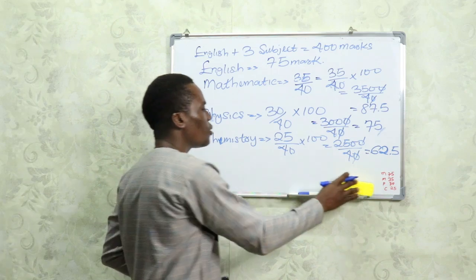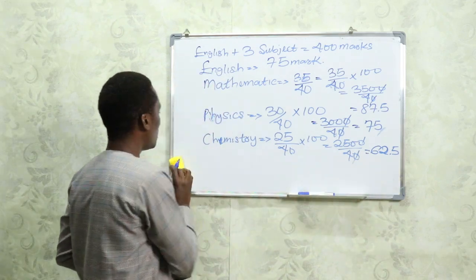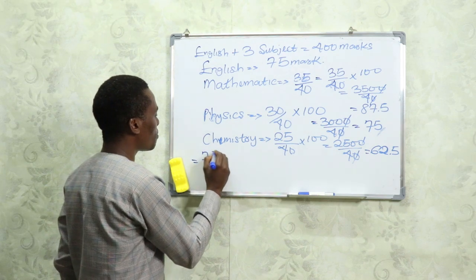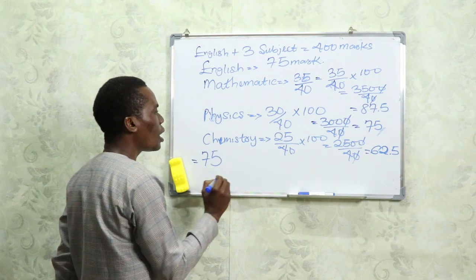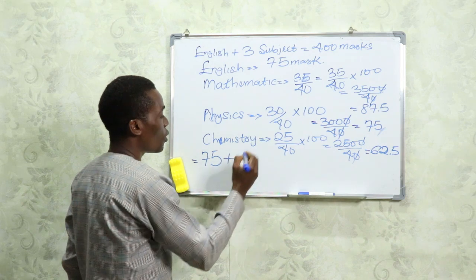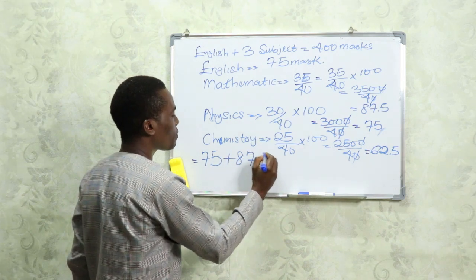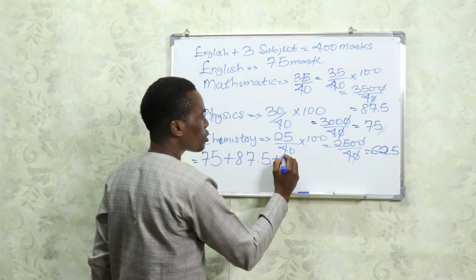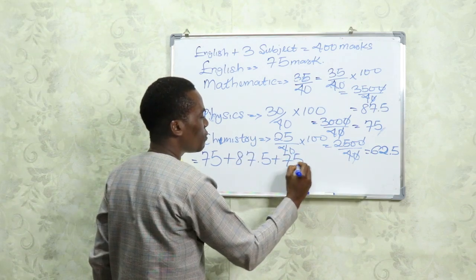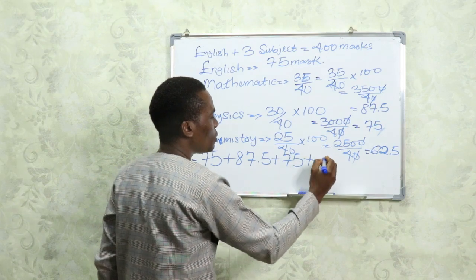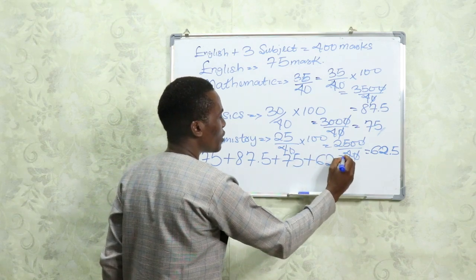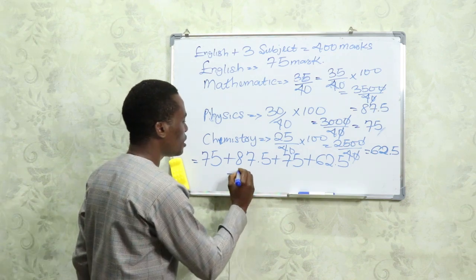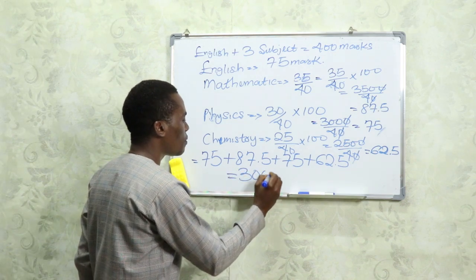Now let's see how you are going to get a 300 score from all these. Your English you are going to get 75 marks, plus your mathematics you score 87.5, your physics you score 75, in your chemistry you score 62.5. Now sum all these things together. If you sum all these things together you are going to have 300.